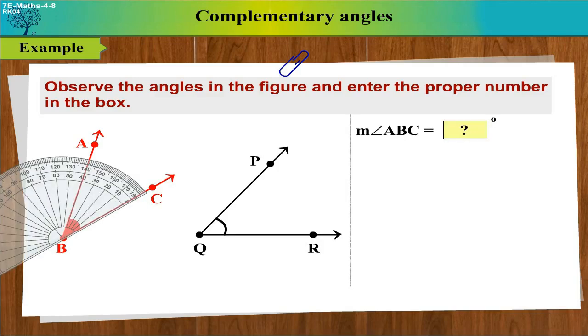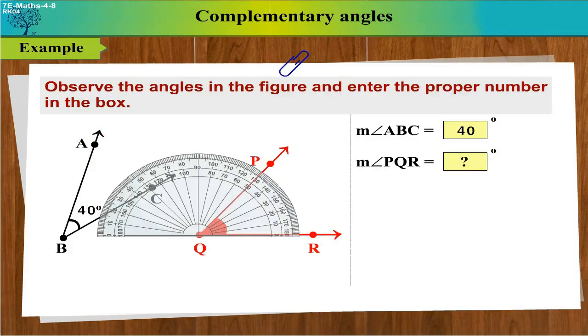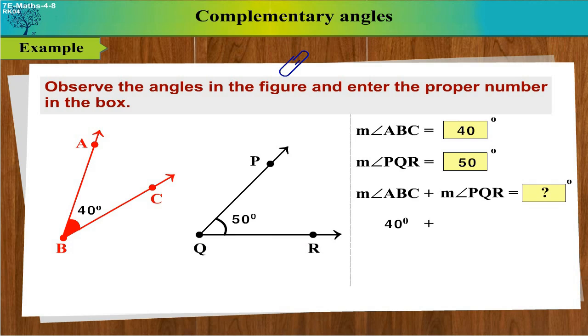Now measure of Angle ABC is equal to 40 degrees. Measure of Angle PQR is equal to 50 degrees. Measure of Angle ABC plus measure of Angle PQR is equal to 90 degrees.